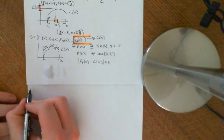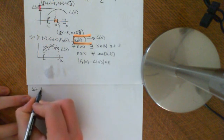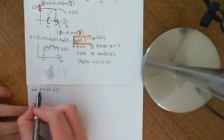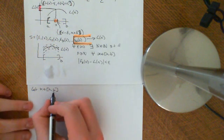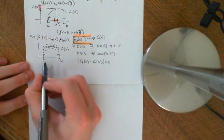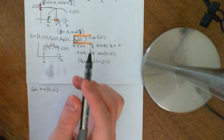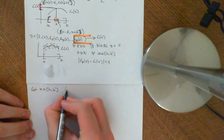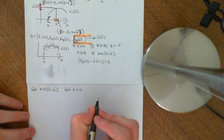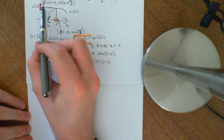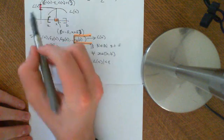Remember what we're trying to do: to prove continuity, we need to show that we can construct a delta interval around a point k. Let k be an arbitrary point in the interval AB — I'm using k instead of x to avoid confusion. Let epsilon be some arbitrary number greater than zero. Our aim is now to show that we can construct a delta interval around k such that that entire delta interval is mapped into the epsilon interval around the point L(k).